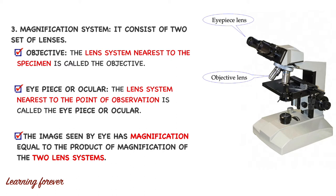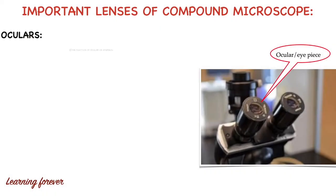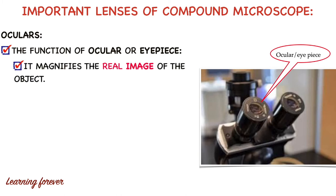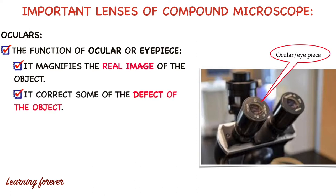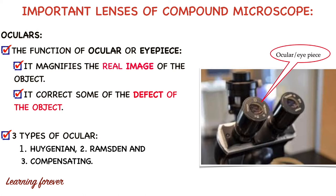There are different types of eyepiece and objective lenses, each playing an important function in magnification. The ocular lens, also called eyepiece lens, plays two important functions: first, it magnifies the real image of the object; second, it corrects some defects of the image so all components can be properly seen. There are three types of ocular: first, Huygenian; second, Ramsden; and third, compensating.